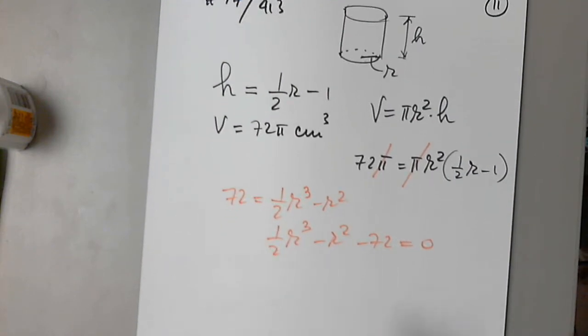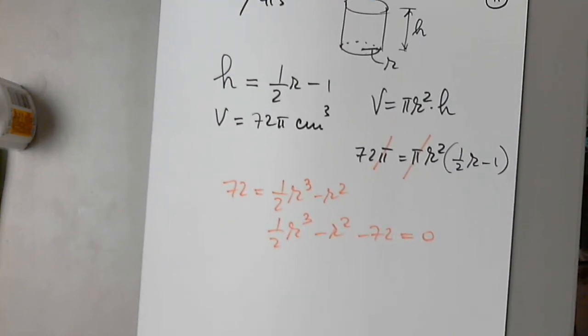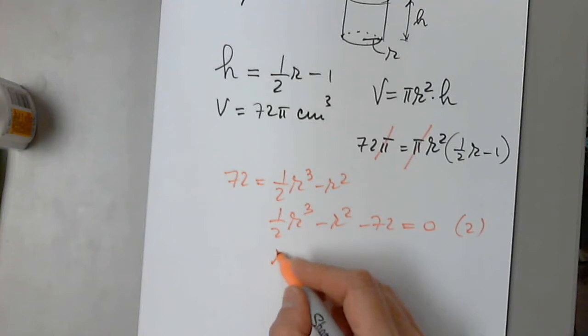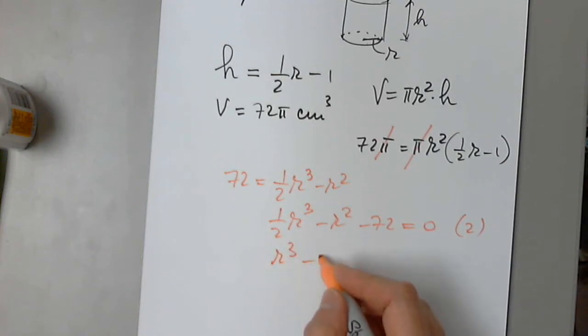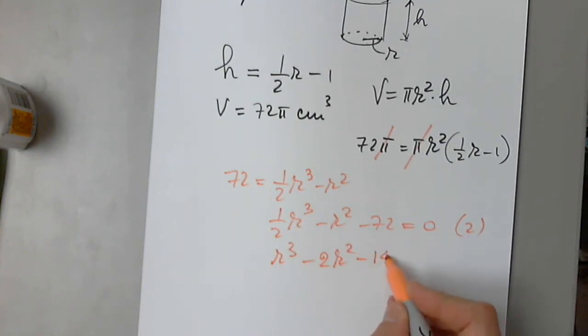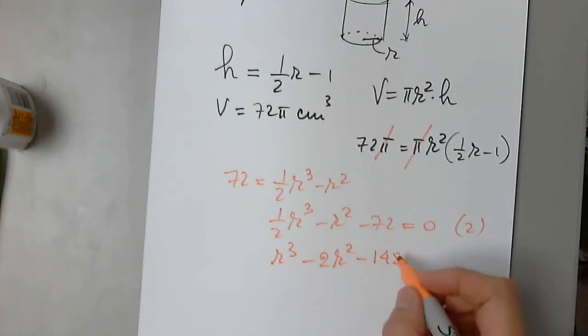I want to get rid of that one half in front, so I'll multiply by 2. So I have r cubed minus 2r squared minus 144, of course.